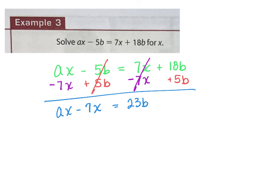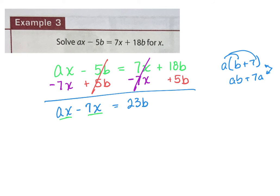Now let's think about distribution. Distribution works both ways — both directions. I can distribute into parentheses or I can distribute out of parentheses. If I have the same thing multiplying two terms, I can take it out and put parentheses around it. Right here, X is multiplying both A and the negative 7. So distribution says that is the same as X on the outside and just A minus 7 on the inside. If you distribute: X times A is AX, X times negative 7 is negative 7X. Yes — that is the same thing.